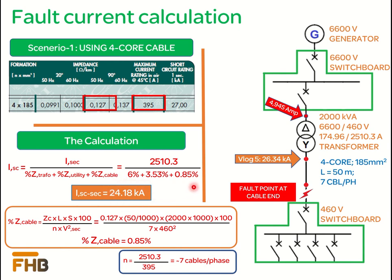It is important to note that in our last video the value of short circuit current at transformer secondary terminal without taking the cable effect was 26.34 kilo amperes. Therefore we can say that the cable helped in reducing the value of short circuit current to 24.18 kilo amperes.